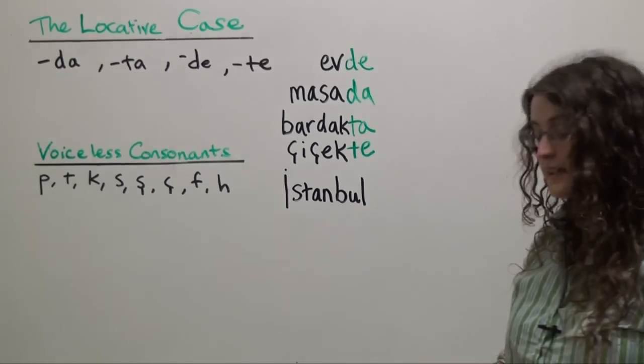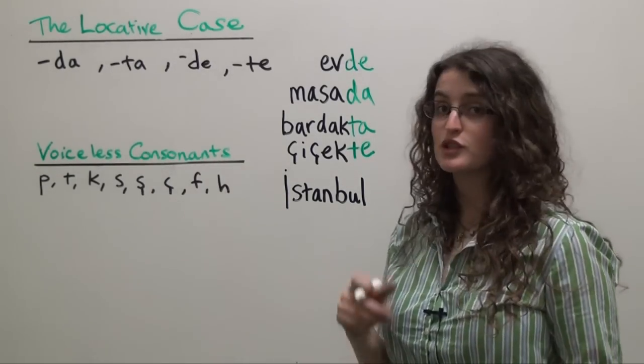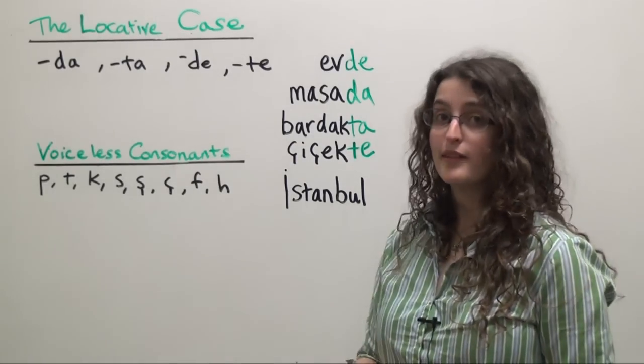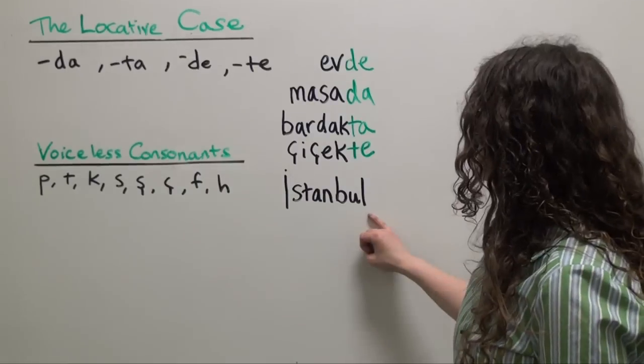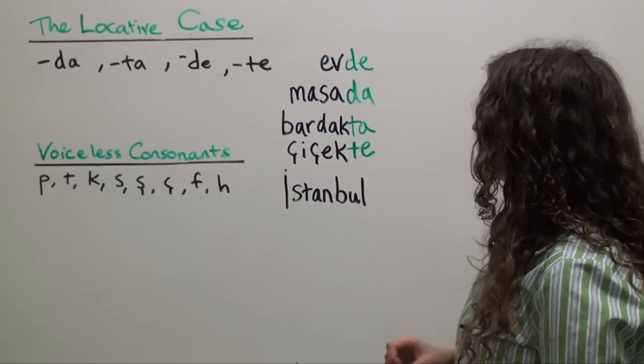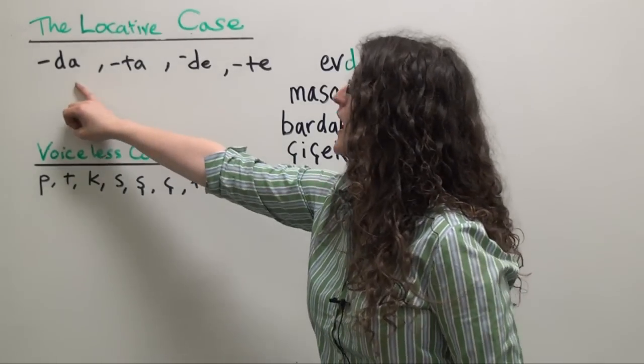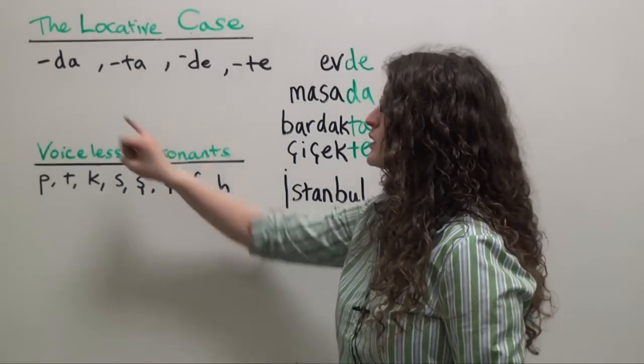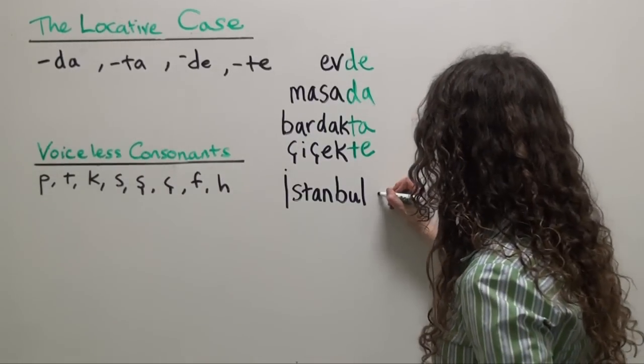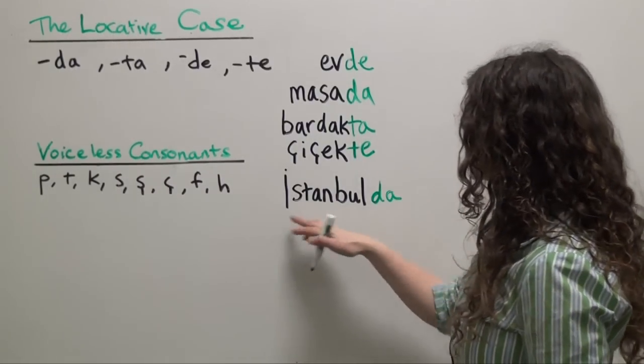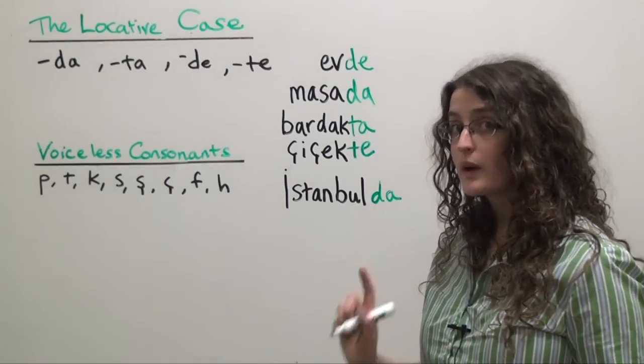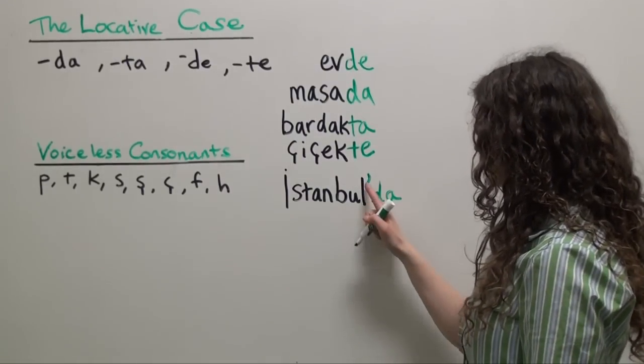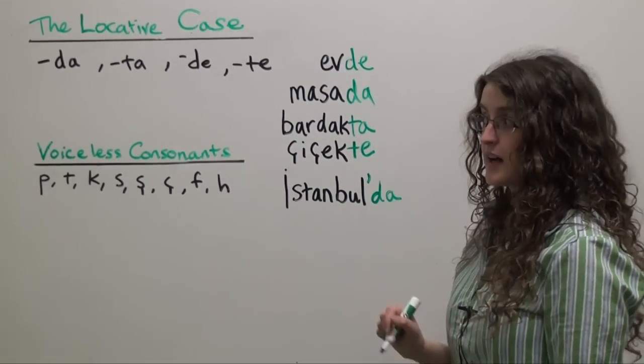But we want to say in Istanbul, so we're going to add the appropriate version of the locative case ending. Our two-way vowel harmony rules tell us that for İstanbul, we're going to want da. Notice İstanbul does not end with a voiceless consonant, so we're going to go for da. İstanbul'da. Because İstanbul is a proper noun, we have to remember to include a little apostrophe between the noun and the locative case ending.